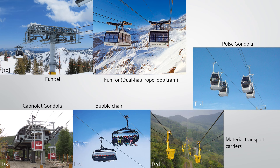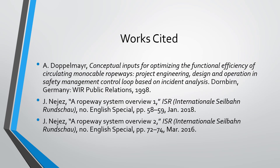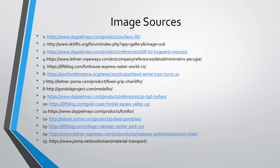I didn't include carriers as a criteria question on the Tree of Ropeways because it would have made things a little too complicated visually, and there are many different types of carriers. Some additional carriers, in addition to the images shown on the tree, include cabriolet gondolas, bubble chairs, and material transport carriers for ore. I want to stress that this ropeway classification system is not of my own doing but comes from the work of Dr. Josef Negez and Dr. Artur Doppelmayr. The sources I used to put together this webinar are cited on this slide, along with the sources of all the images used today.